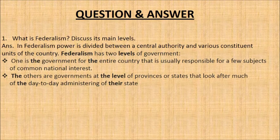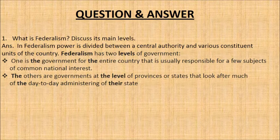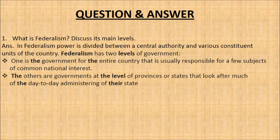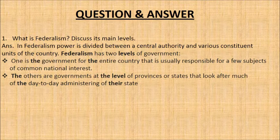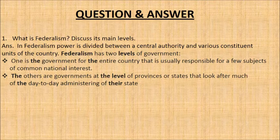Now let's discuss the question answers which you need to write in your notebooks. The first question: What is federalism? Discuss its main levels. In federalism, power is divided between a central authority and various constituent units of the country. Federalism has two levels of government — one is the government for the entire country, responsible for subjects of common national interest, and the other are governments at the level of provinces or states, that look after much of the day-to-day administering of their state.